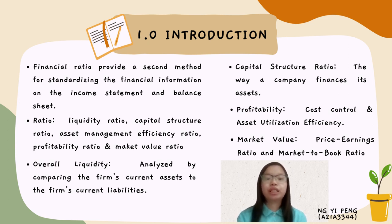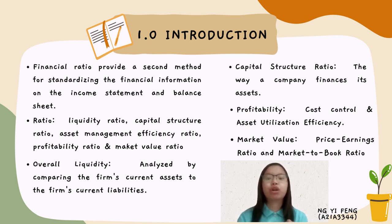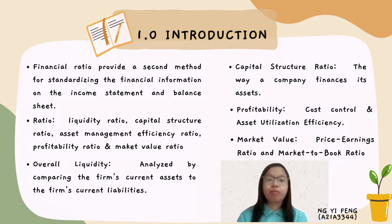Overall, liquidity is analyzed by compiling the company's current assets to the company's current liabilities. Capital structure lecture refers to the ways of a company's financial assets. Asset management efficiency assesses how well a company manages its assets to increase revenue. There are two basic determinants of corporate profitability, which are cost control and asset utilization. Price-earnings ratio and market-to-book ratio are the two categories divided under market value.